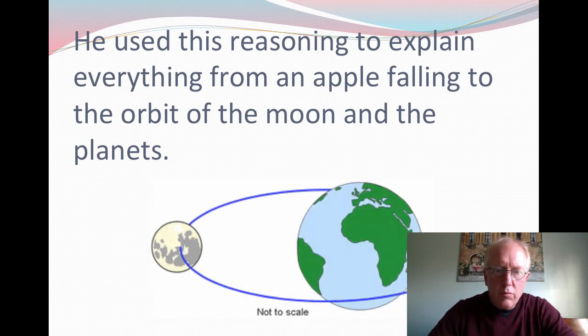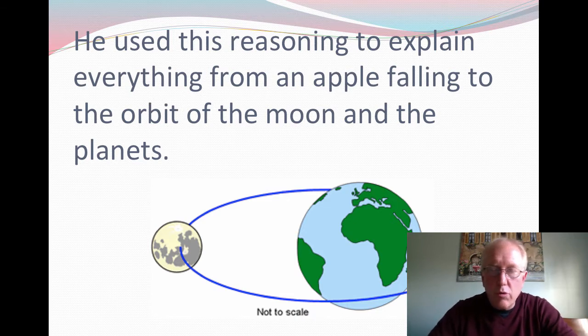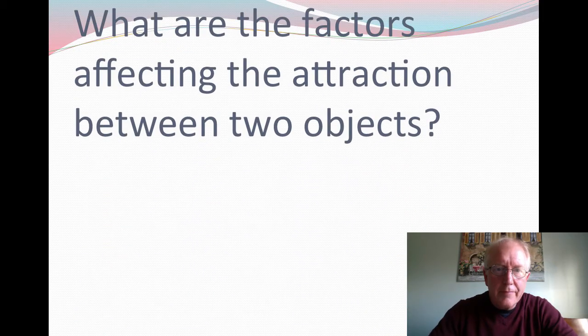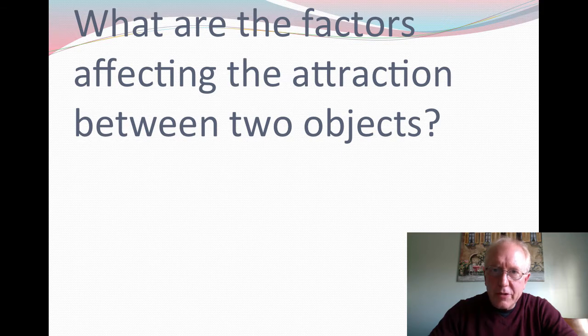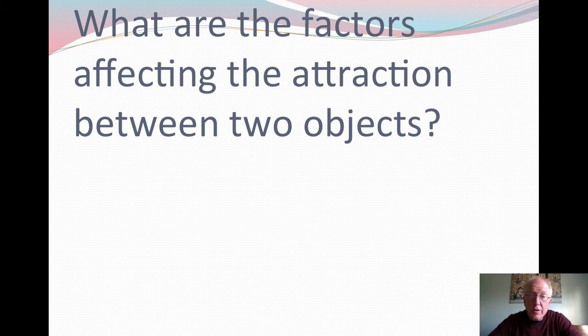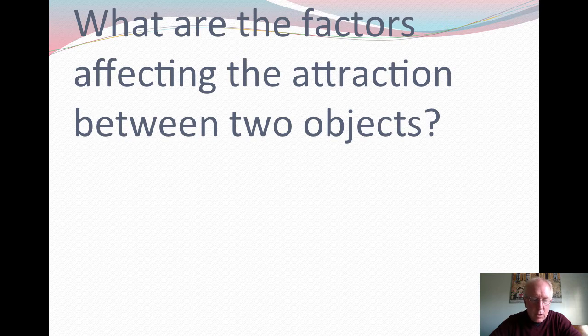So here is the moon going around the earth, and please note that is not to scale. But there's our moon going around the earth. Okay, so let's talk about this. If there's an attraction between every two objects in the universe, what are the factors? What do you think the factors are? So you want to pause and think about it, that's okay. But let's see how you did here.